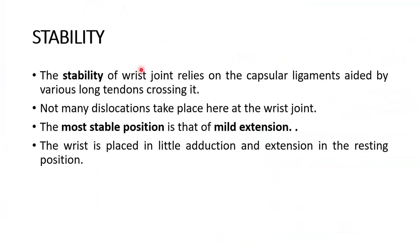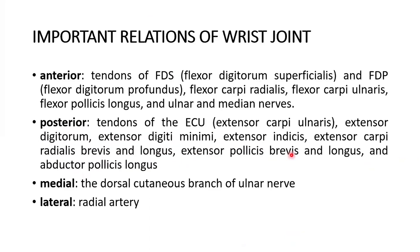The stability of the joint relies on the capsule ligaments, aided by the various long tendons crossing it. Not many dislocations take place at the wrist joint — it is very stable. The most stable position is that of mild extension. The resting position of the wrist joint is little adduction and extension — this is a very important point.